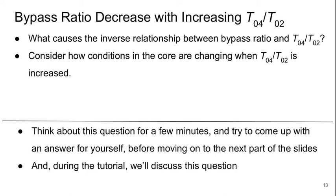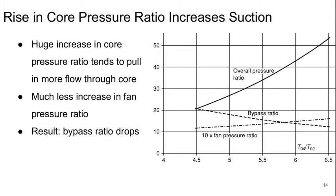Welcome to Part 3 of Lecture 21 of Aerospace Propulsion. We left off with the question of what causes the inverse relationship between bypass ratio and T0.4 over T0.2. Basically, the more rapid rise in core pressure suction — caused by the increase in core pressure ratio — drives this. More flow is being sucked into both the bypass and the core, but as T0.4 over T0.2 goes up, more is getting sucked into the core faster than into the bypass. As a result, the bypass ratio drops.